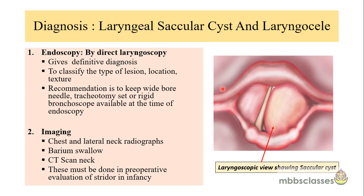For diagnosis of laryngeal saccular cyst and laryngocele, the diagnostic test is endoscopy — direct laryngoscopy is preferred. It helps classify the type, location, and texture of the lesion. Before performing any endoscopy in cases of stridor, it is recommended to keep a wide-bore needle, tracheotomy set, or a rigid bronchoscope ready to avoid any untoward incident. Imaging is used to confirm the diagnosis and assess the presence of air in any cystic lesion. Investigations include chest and lateral neck radiograph, barium swallow, and CT scan of the neck, which must be done in pre-operative evaluation.